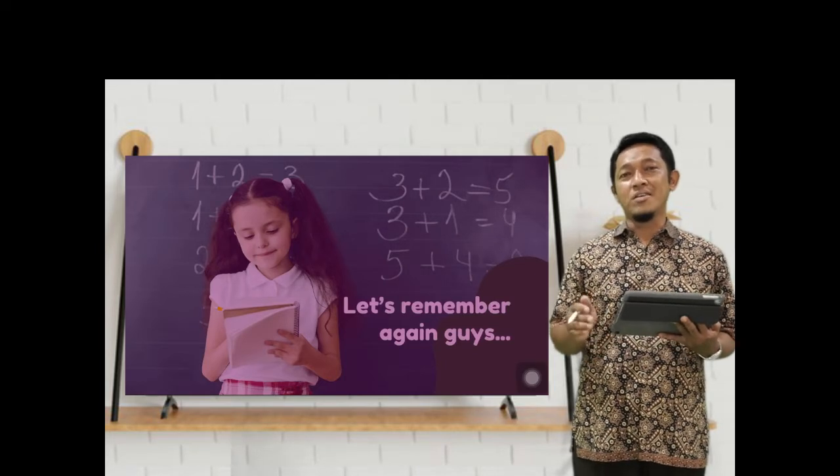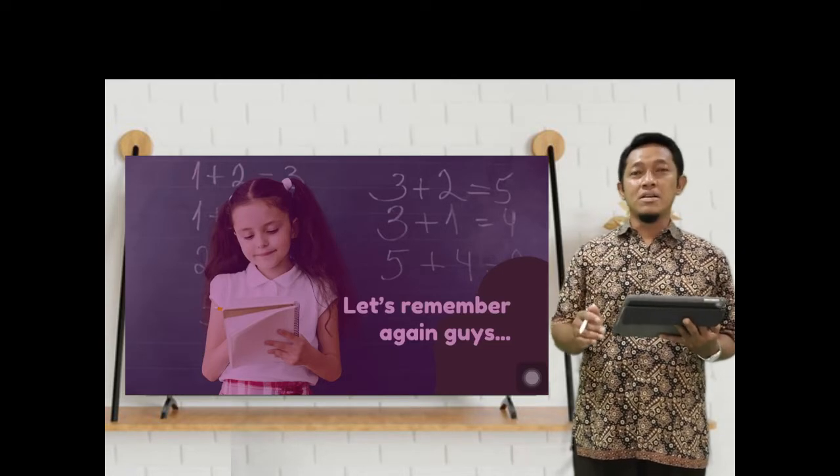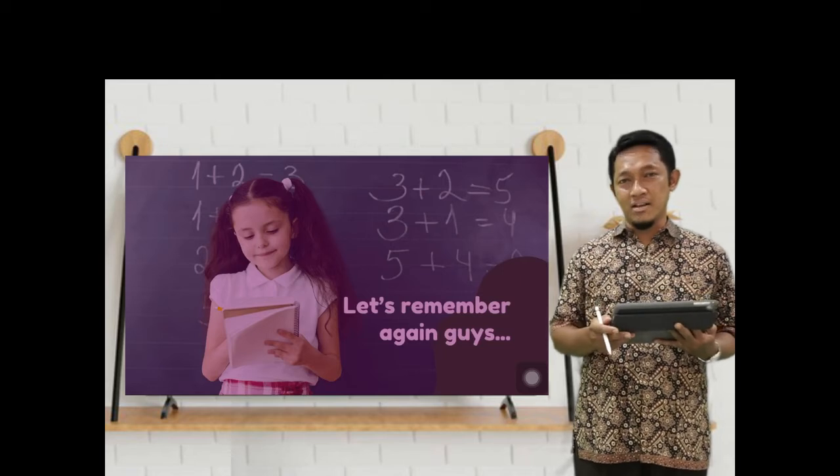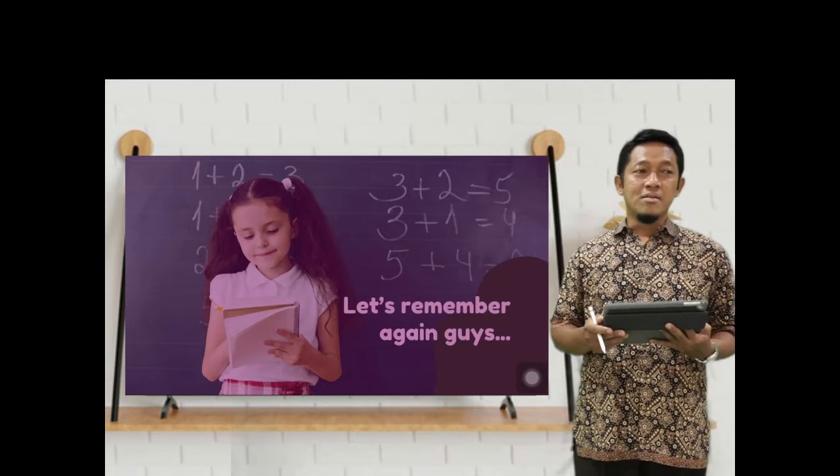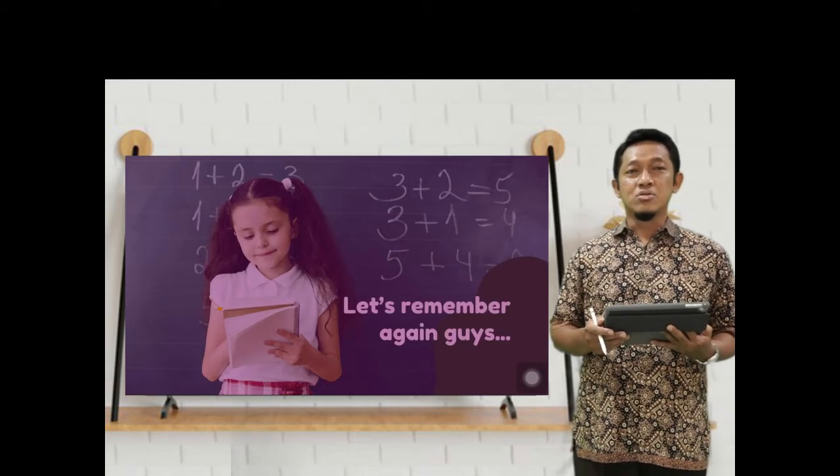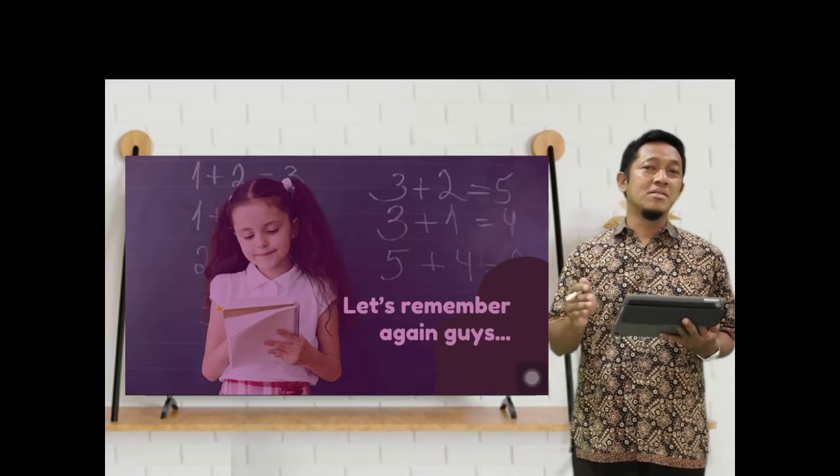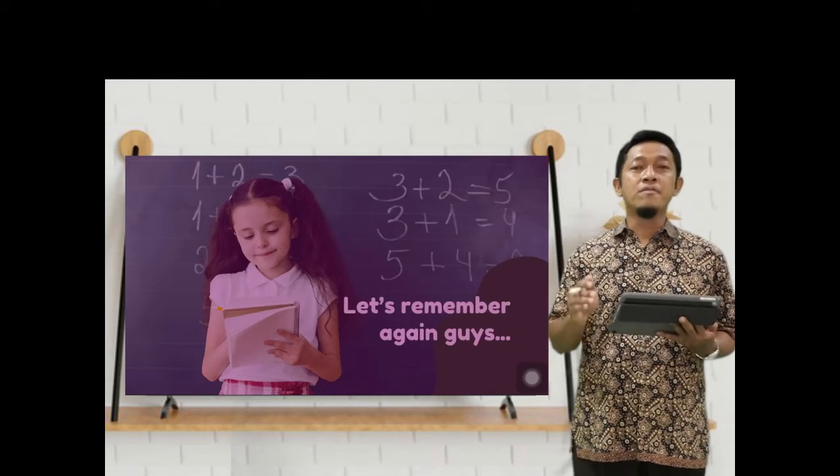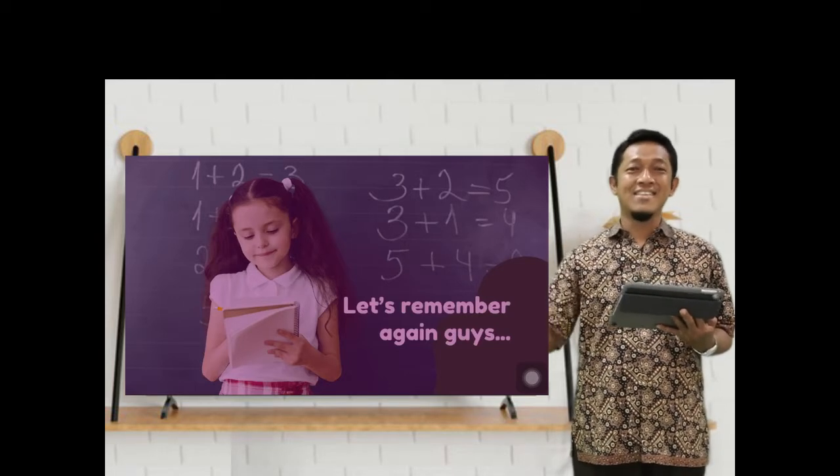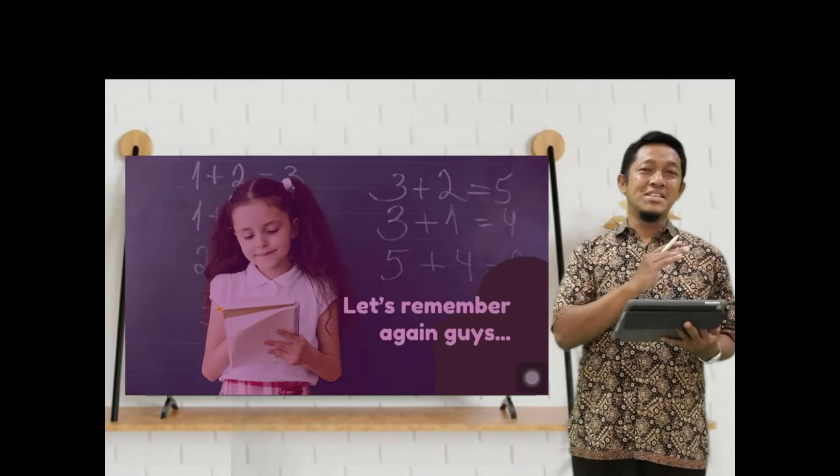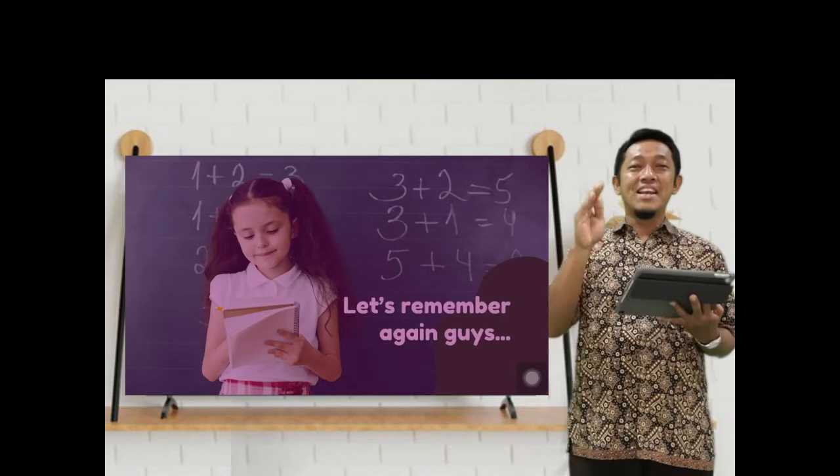This is just a review, just repeating what we learned at the beginning of the semester. We already learned about this material. What is the title? The title is multiplication. Multiplication part 2. I hope you still remember about the results of single multiplication.